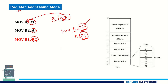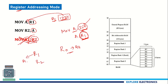We can make use of registers R0 to R7, but moving data directly from R1 to R2 is not allowed. We are not supposed to do that. If you want to move data from R1 to R2, first take the content of R1, put it into A, then move the content of A to R2. We cannot write MOV R1, R2 directly — remember this.